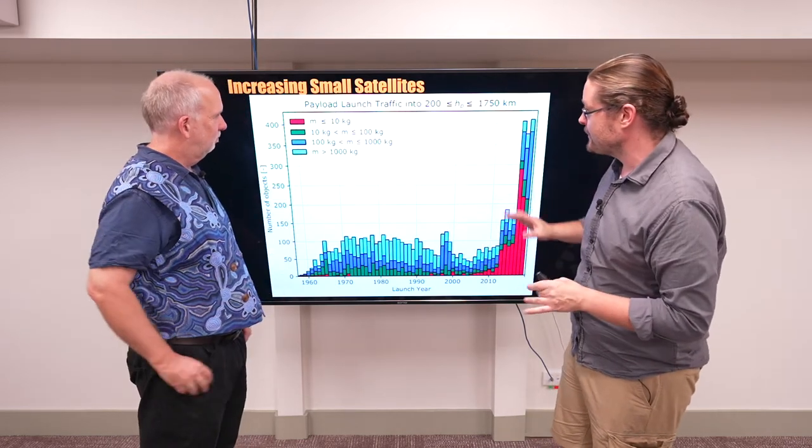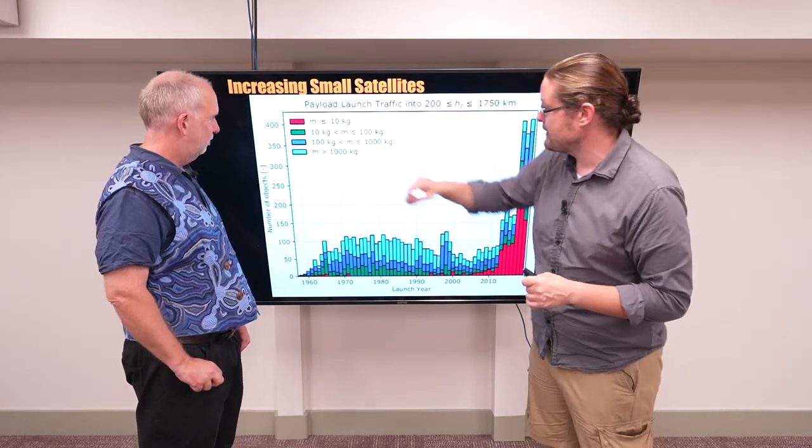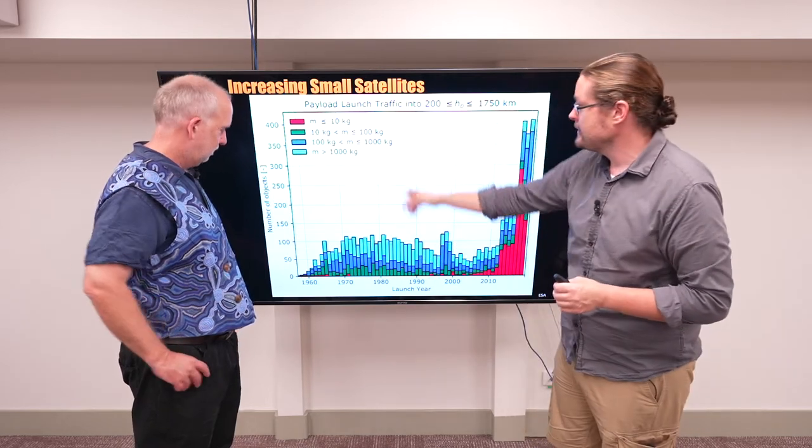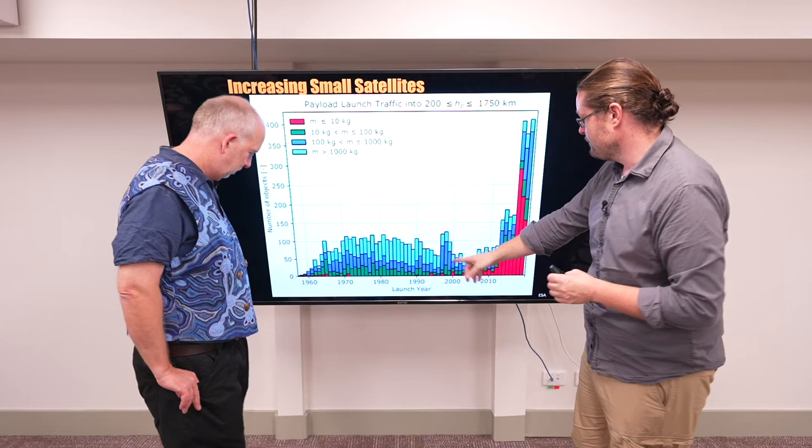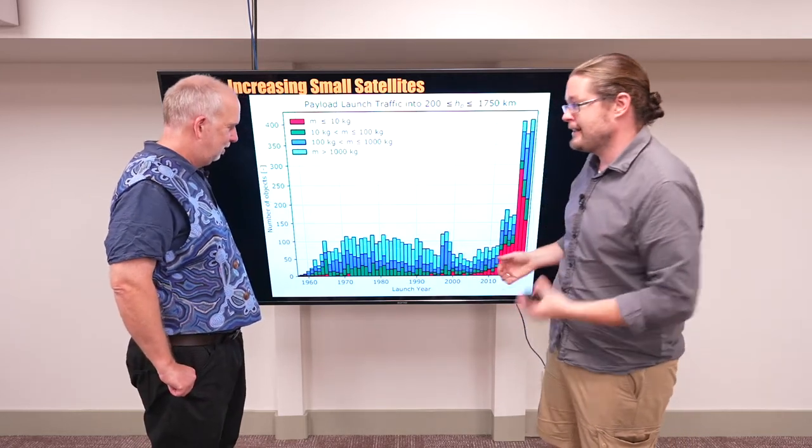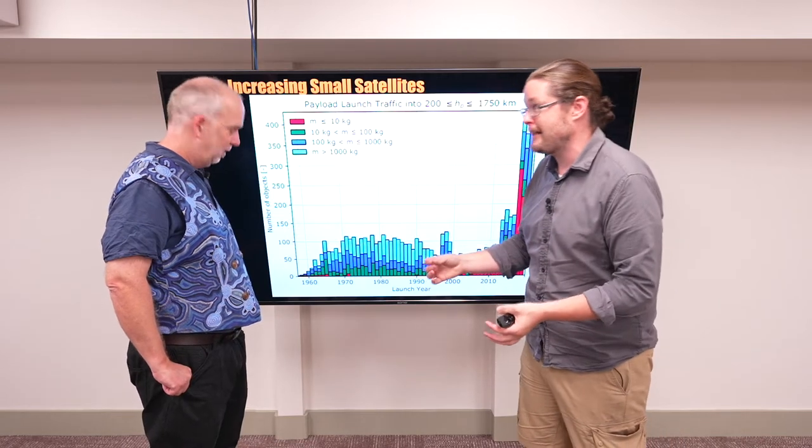so this is weight. So red is less than 10 kilograms, those really small ones. Kind of the medium ones are green and the giant ones are dark blue and, you know, some of these in the early days weigh over a ton. And a ton is really expensive to get into space.